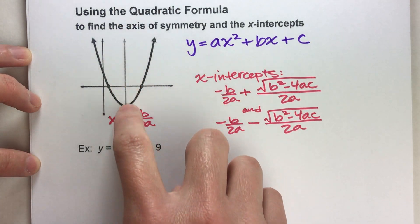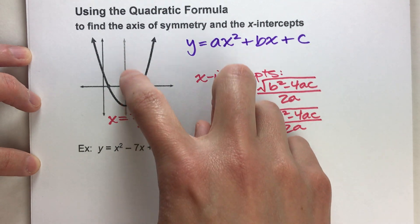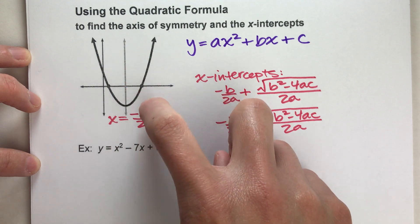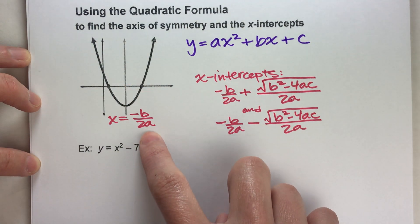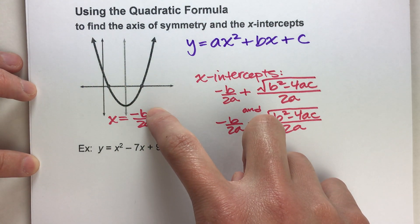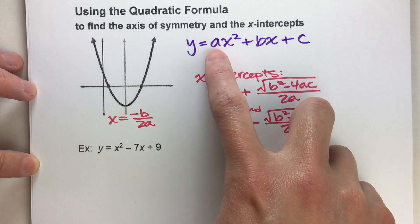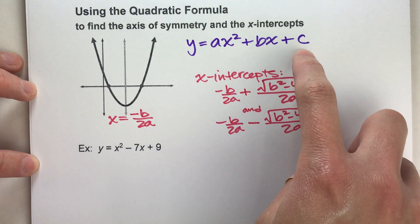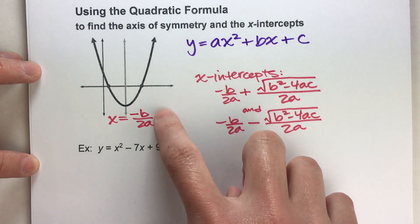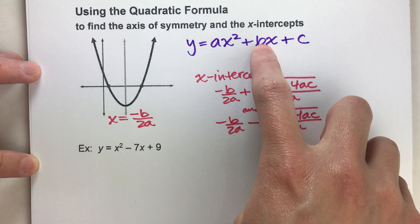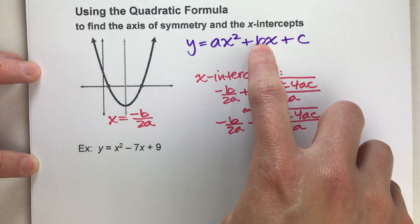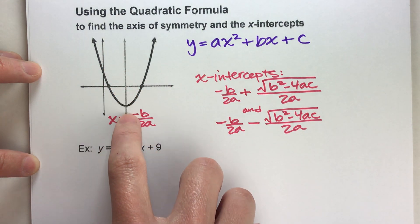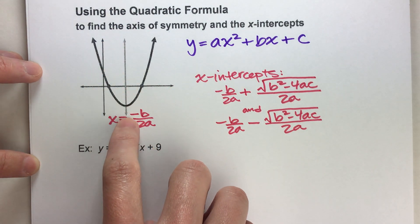The equation for the axis of symmetry is going to be x equals whatever number is on the x-axis. We can use a formula to figure out what that number is: negative b divided by 2a. So if we take the coefficients a, b, and c from the standard form equation, all we do is take the opposite of b divided by 2 times a, and that will tell you exactly where that line of symmetry will be.